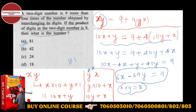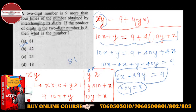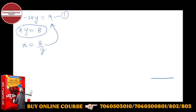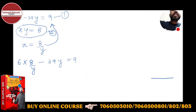So we have two equations: equation 1 is 6x − 39y = 9, and equation 2 is x·y = 8. From equation 2, x = 8/y. Now substitute this value of x into equation 1: 6·(8/y) − 39y = 9, which gives 48/y − 39y = 9.